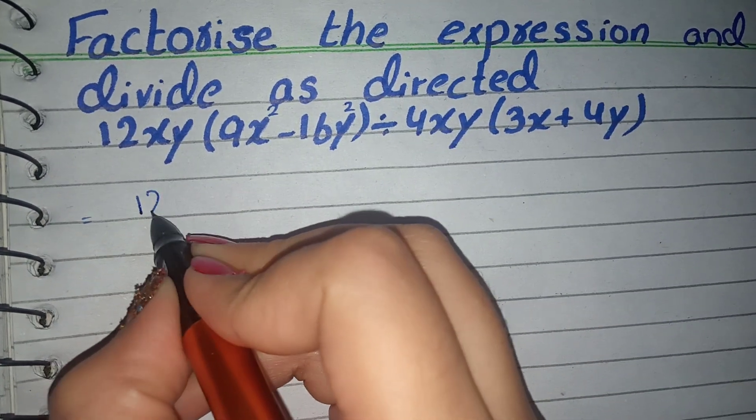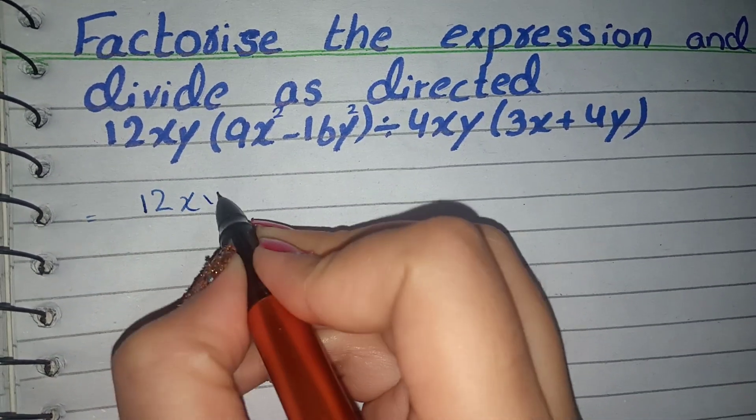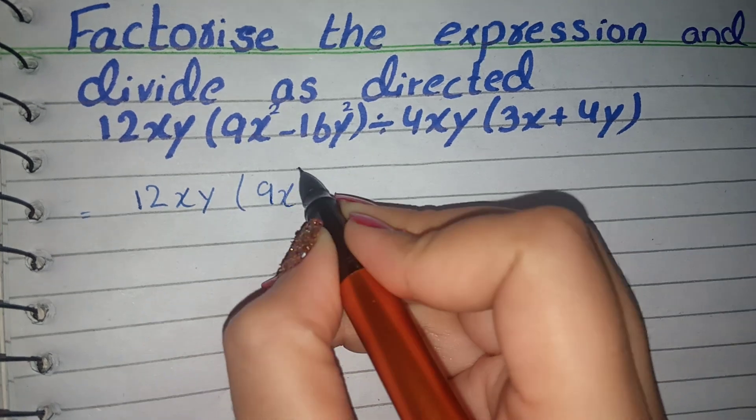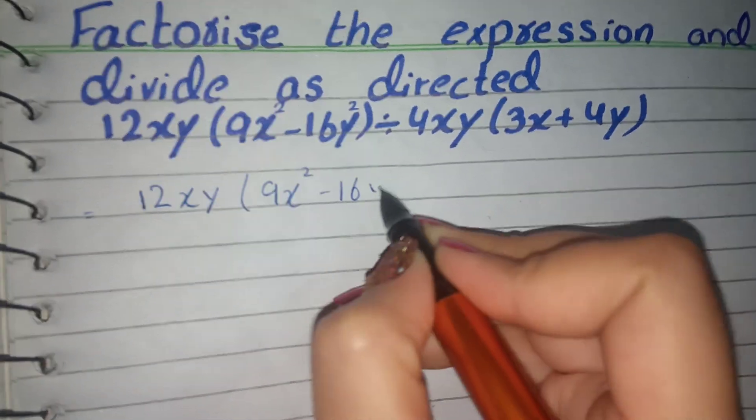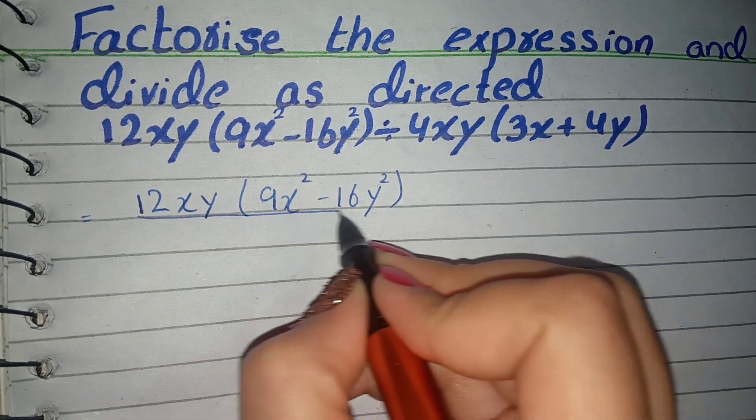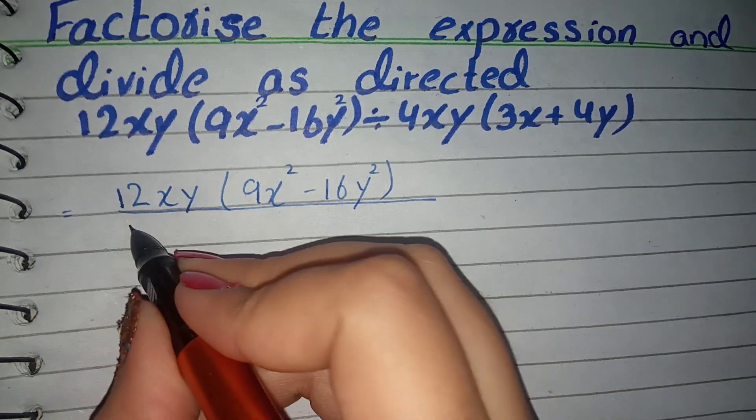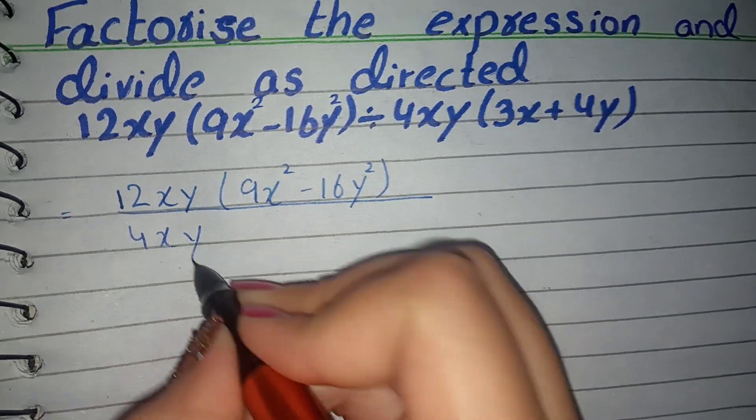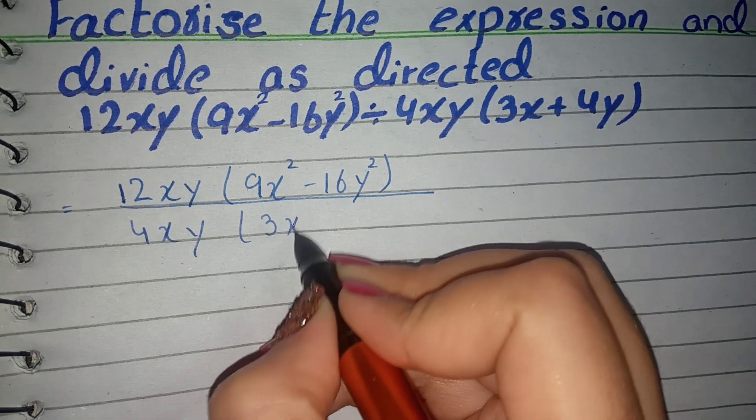Before the divide sign, I have 12xy and in brackets 9x square minus 16y square. After the divide sign, I have 4xy and here 3x plus 4y.